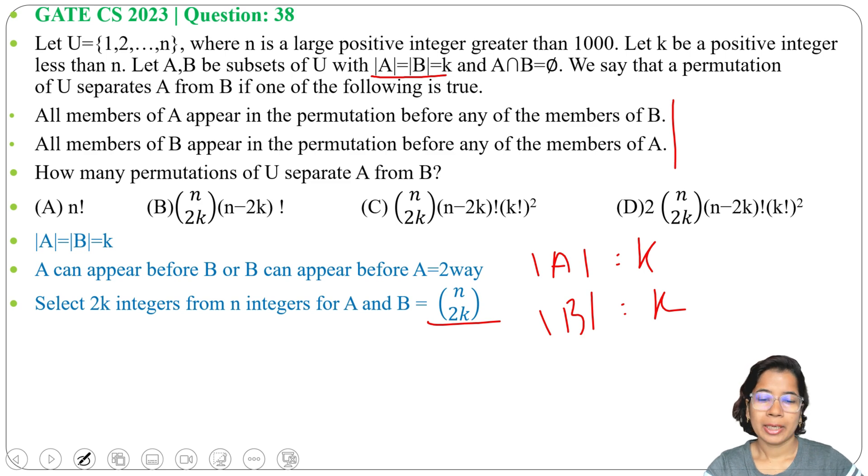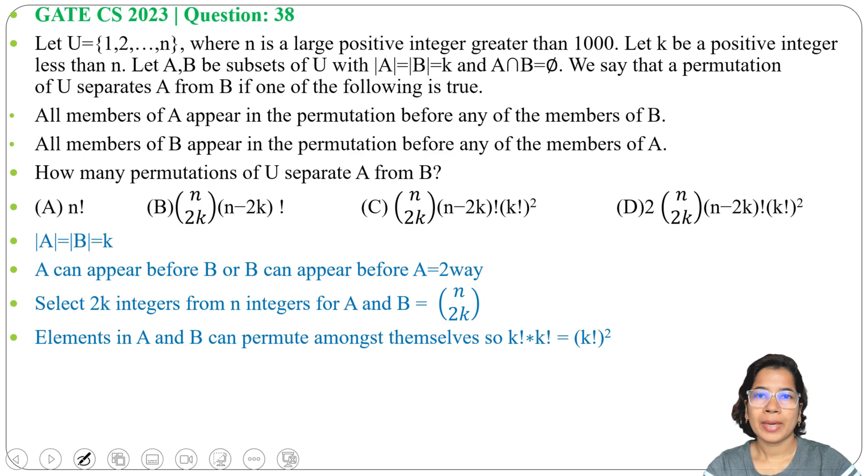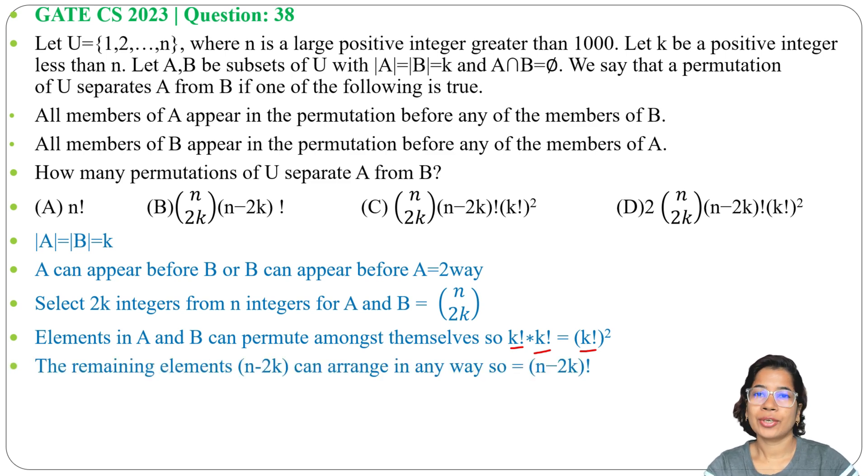In between A there can be k permutations, in between B there can be k permutations. Elements of A can permute themselves in k! ways and elements of B can permute themselves in k! ways. That's why (k!)². And whatever is left over, from n we chose 2k elements, so how many elements are left? It's n minus 2k. That can be arranged in (n-2k)! ways.